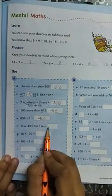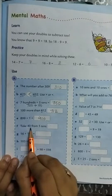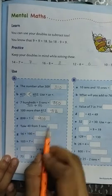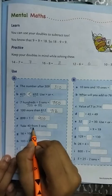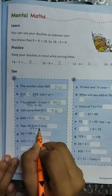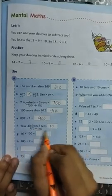Take 40 from 5 tens. 5 tens is 50 and here we have to subtract. 50 minus 40 is 10.